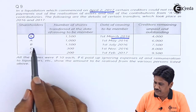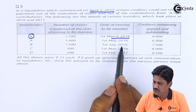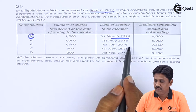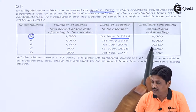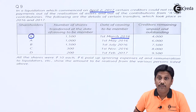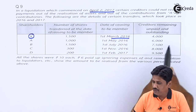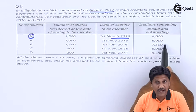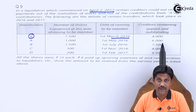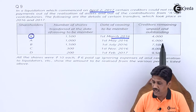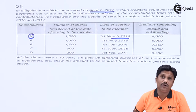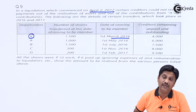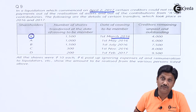Mr. B transferred 1,500 shares on 1st July 2016. At that time the liability had increased to Rs. 7,500. Beyond that, whatever amount arose as a liability, A will not share — A already transferred his shares on 1st May and is not responsible for any liability which took place after 1st May.